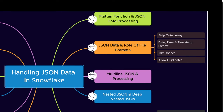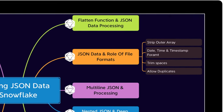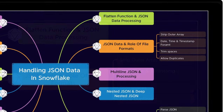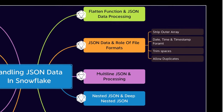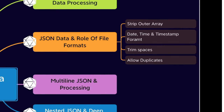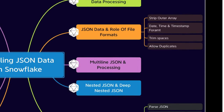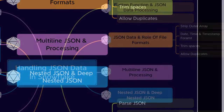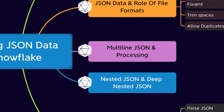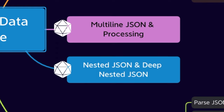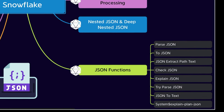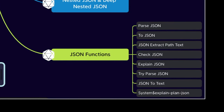We will move to the FLATTEN function and its role while processing data in Snowflake — a very important topic and one of the most powerful functions provided by Snowflake. We will also see the role of file formats while loading data, handle multiple-line JSON objects, elaborate on nested and deep-nested JSON processing complexity, how to convert them into a tabular format, and cover different JSON functions provided by Snowflake for processing, validation, and parsing.